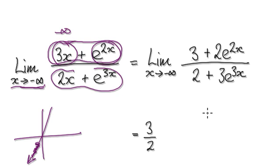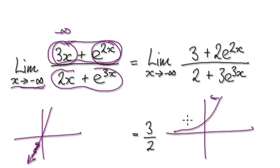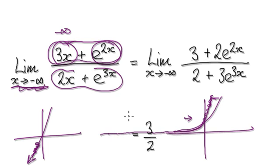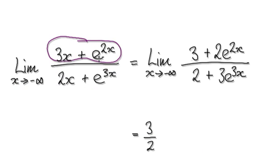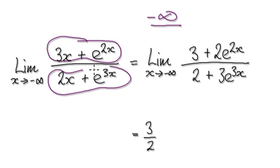If you look at this, e to the power of x looks like this, so 2e is going to get squashed inwards. As x tends to negative infinity, you can see that it's heading towards 0. So this term is heading towards 0, giving you a very negatively large number plus 0. This whole thing heads towards negative infinity. Using the same argument, the denominator is also heading towards negative infinity.